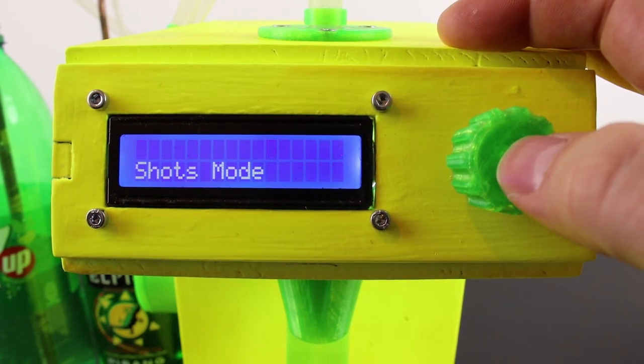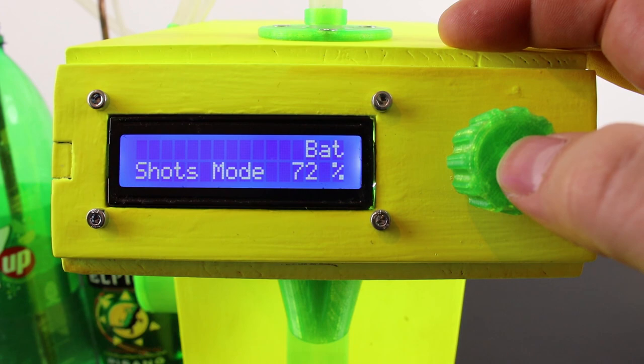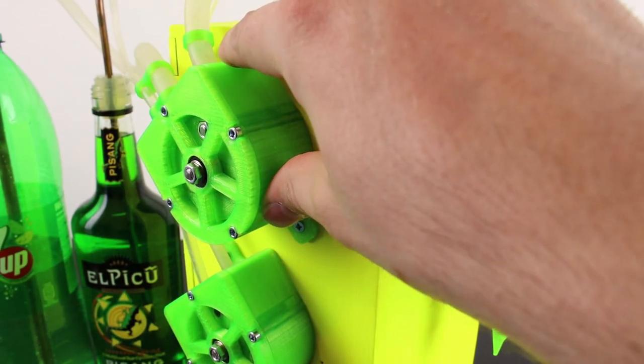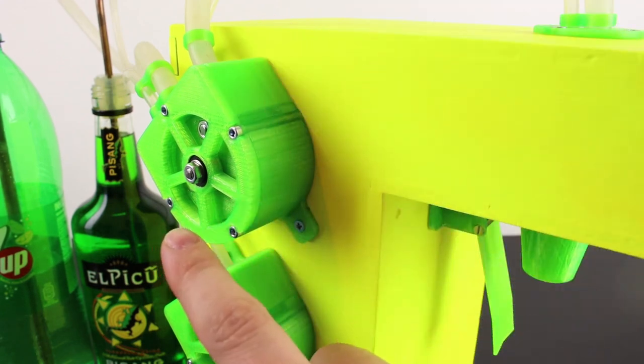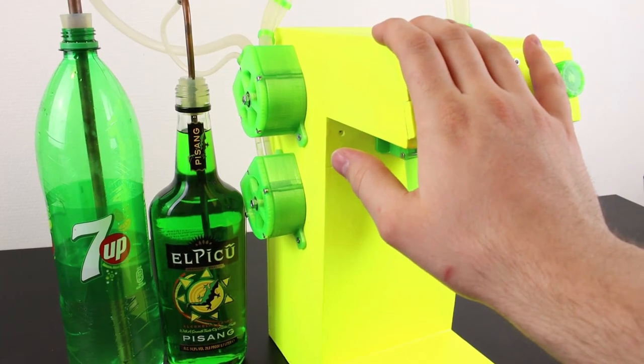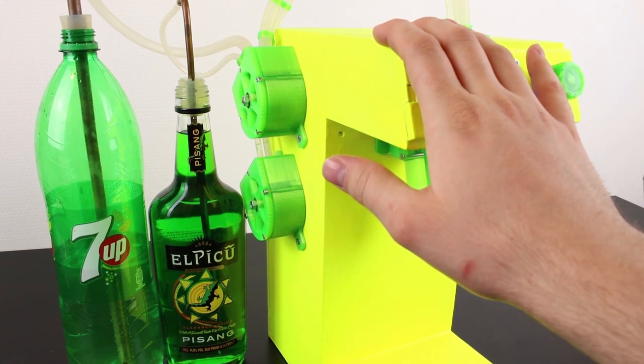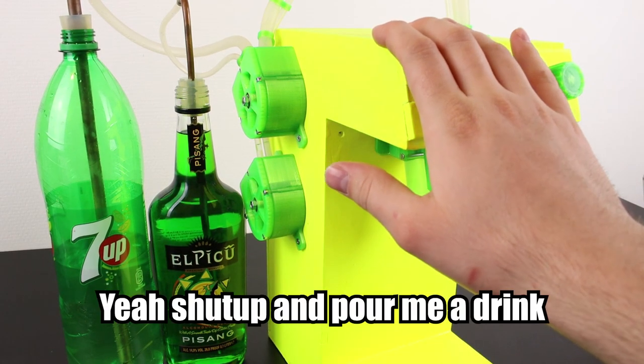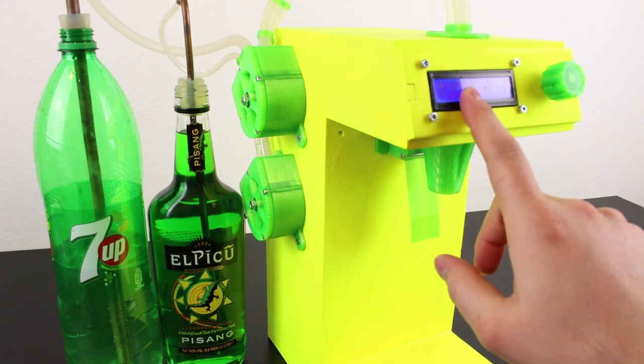When we push the rotary encoder we can see the device goes into shots mode and this disables the soda pump and now the machine will only pour pure liquor. The machine has even more features but you guys are probably thinking that I talk way too long about the stupid LCD and the knob so let's see some action.